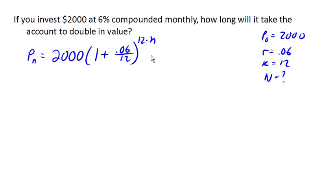Instead, I know how much I want, and we're trying to figure out how long. So the how long is saying I want n. I want to know what n is. Now, in order for my account to double in value, it's going to have to end up being worth 4,000, twice as much.